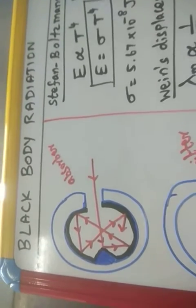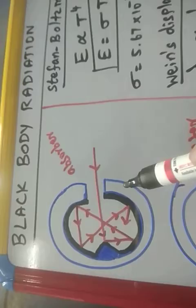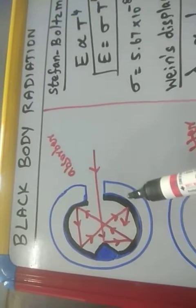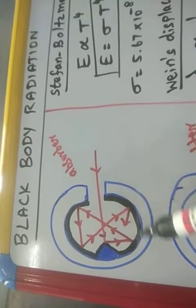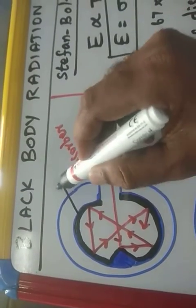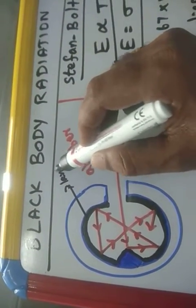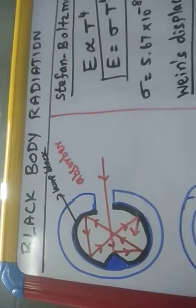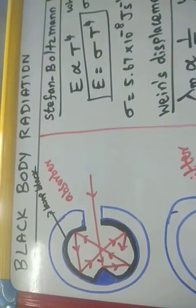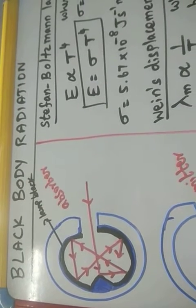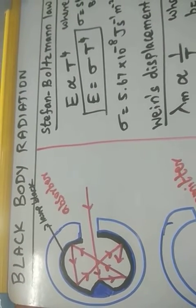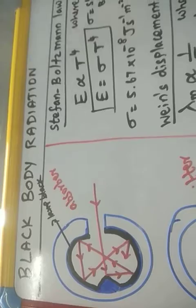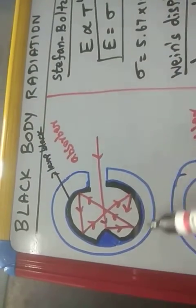Black body radiation. A perfect black body is a metal sphere, inside which lamp black is coated. Lamp black is the black residue you see on your hand if you hold it above a lamp flame. So lamp black is coated on the inner surface of the metal sphere.